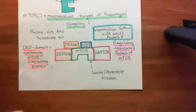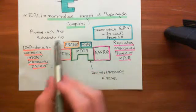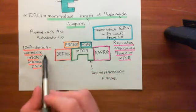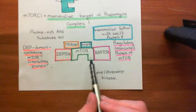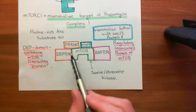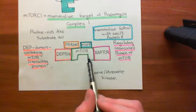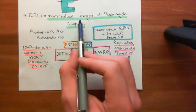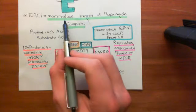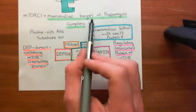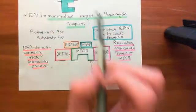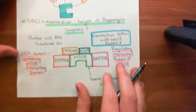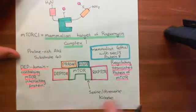That now completes the mammalian target of rapamycin complex 1. These proteins sit within the cytoplasm of your cells, and at the moment they are not active. We're going to see how they can become activated by protein kinase B, which we now have activated.